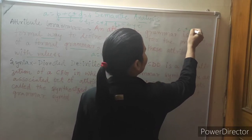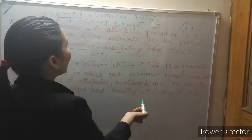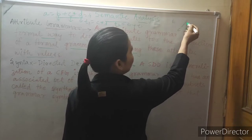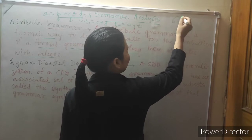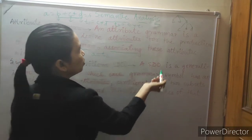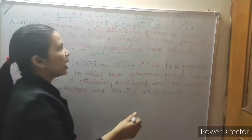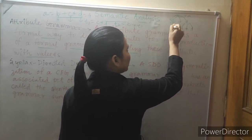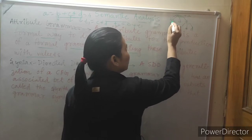From the three-address code we generate the parse tree. C * D is generated by T1, then B + T1 is generated by T2, and T2 is equivalent to A. This is the parse tree, and from this parse tree, B generates a value — suppose the value 4 — which is the attribute value.